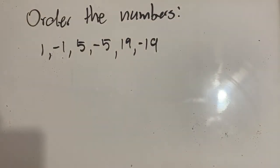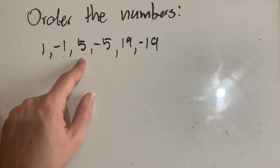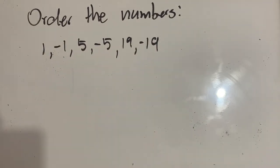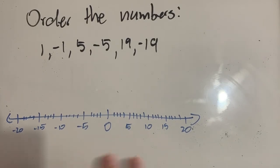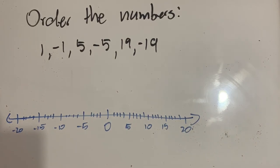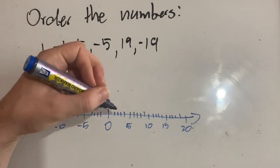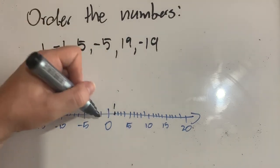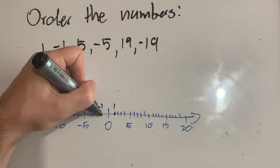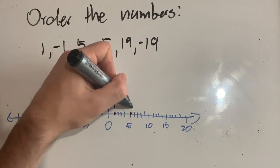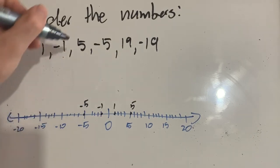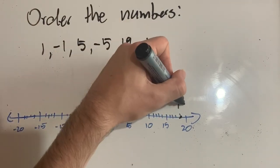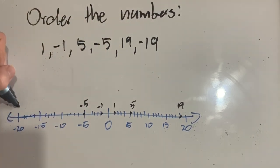Now I've been asked to order these numbers: one, negative one, five, negative five, nineteen, negative nineteen. Let's draw out a number line to help us. Zero is in the very middle, negative numbers to the left, positive numbers to the right. Let's identify each number: one is here, negative one is one less than zero — here; five is over here, negative five is down here; nineteen is all the way up here, and negative nineteen is all the way down here.